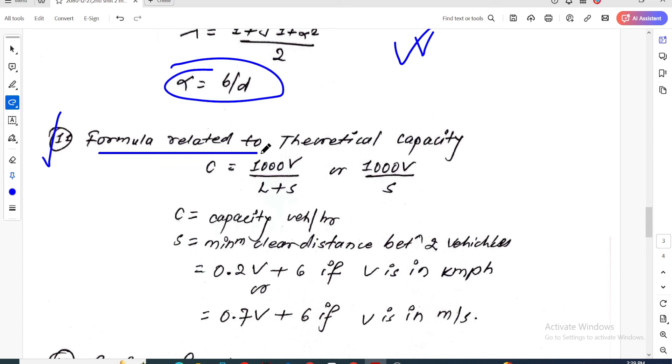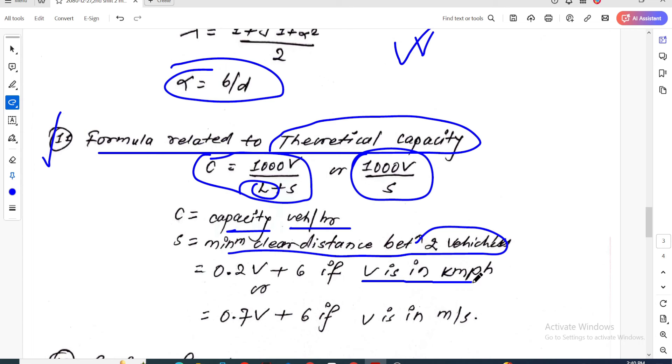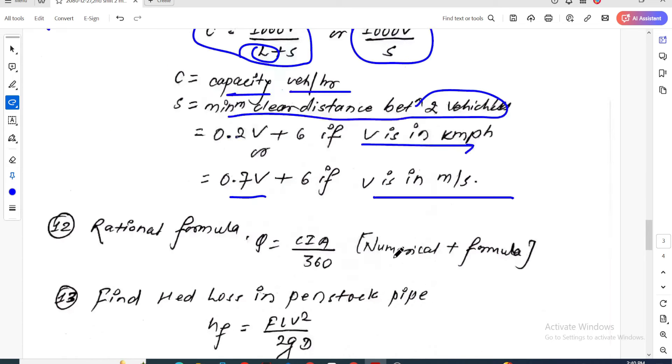Question eleven is about theoretical capacity formula. C equals 1000 times V divided by S, where C is capacity in vehicles per hour, V is speed in km/h, and S is minimum clear distance between vehicles. The formula is 0.2V plus 6 when V is in km/h, or 0.7V plus 6 when V is in m/s.